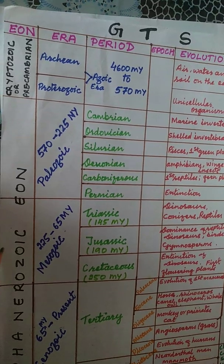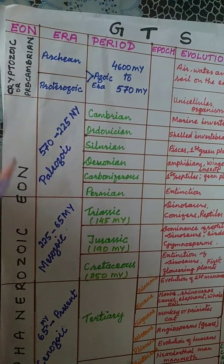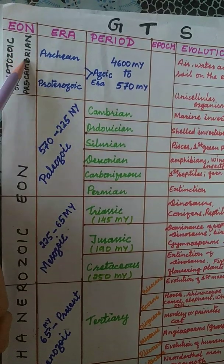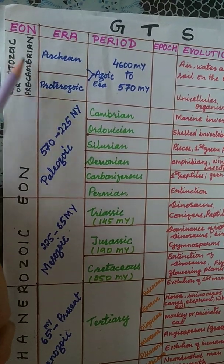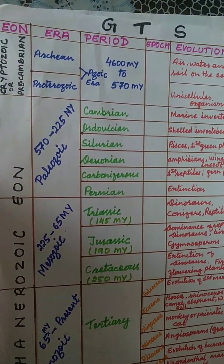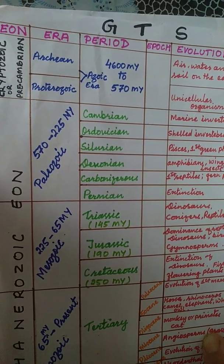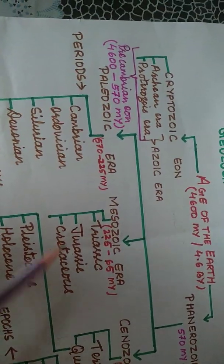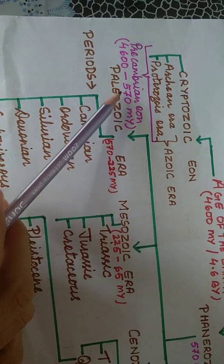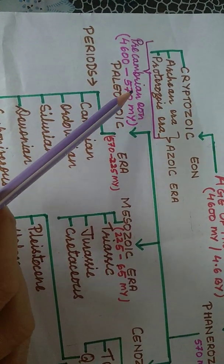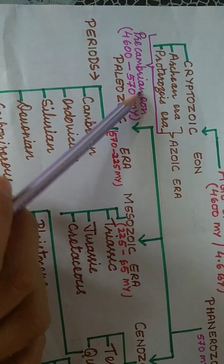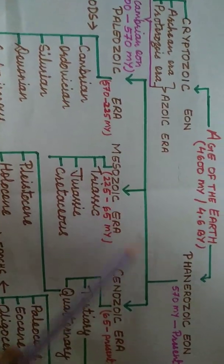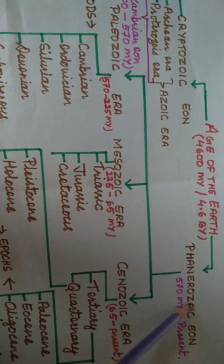There are two eons: Phanerozoic and Cryptozoic, also called Pre-Cambrian Eon. Pre-Cambrian Eon covers almost 3000 million years — from the beginning to 570 million years ago — which is about 88% of Earth's geological time. Phanerozoic Eon covers only 12% of the geological time scale.